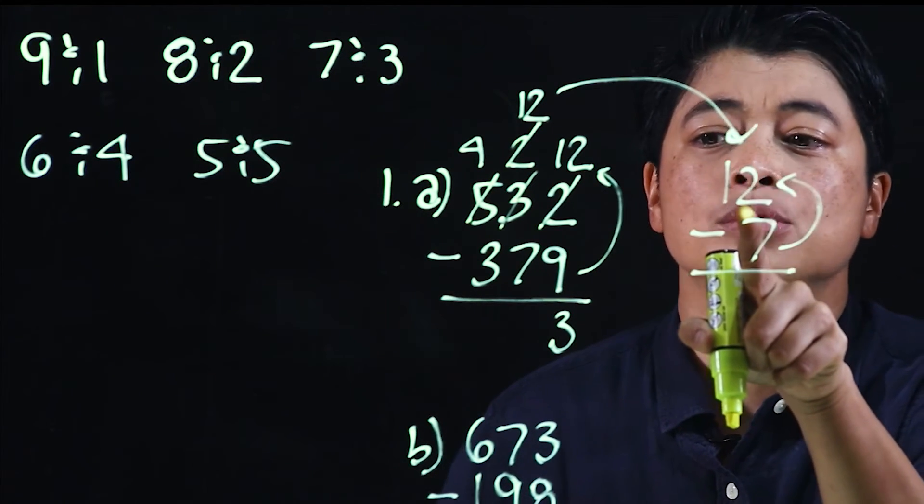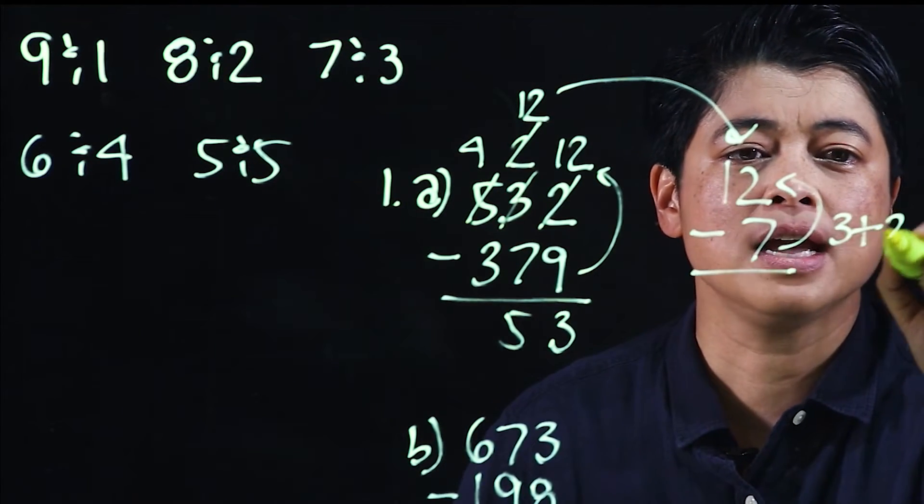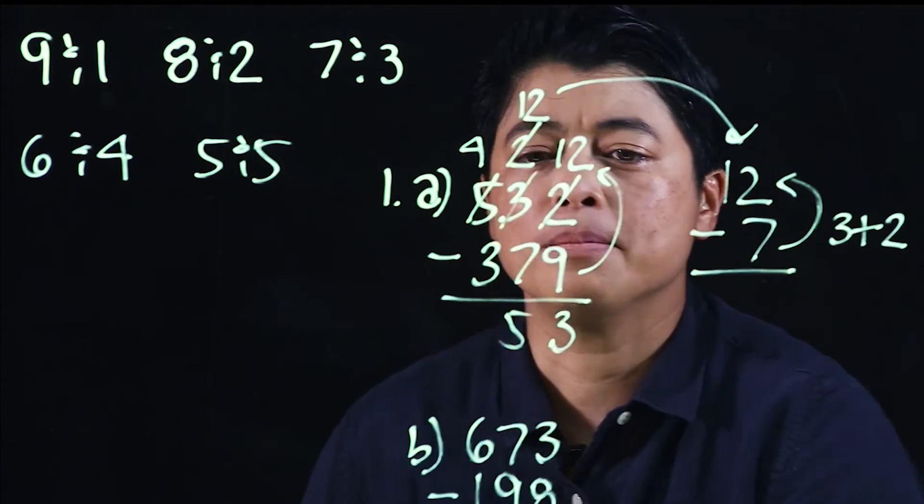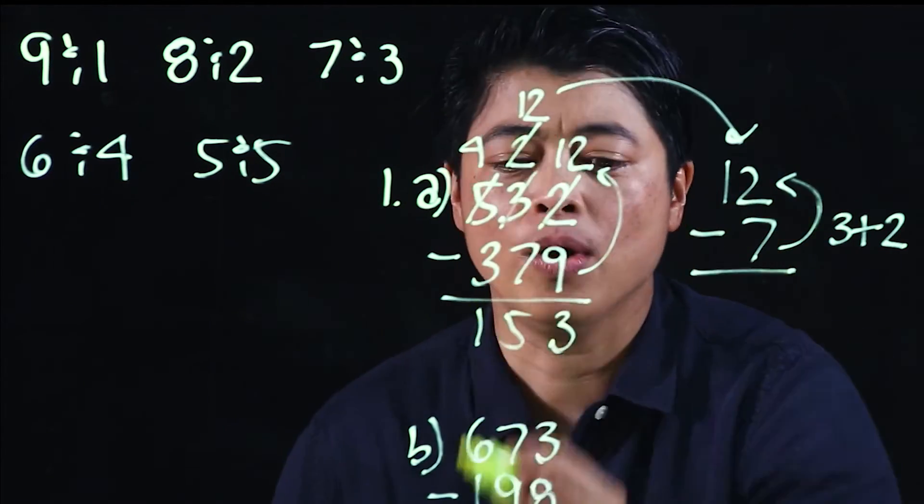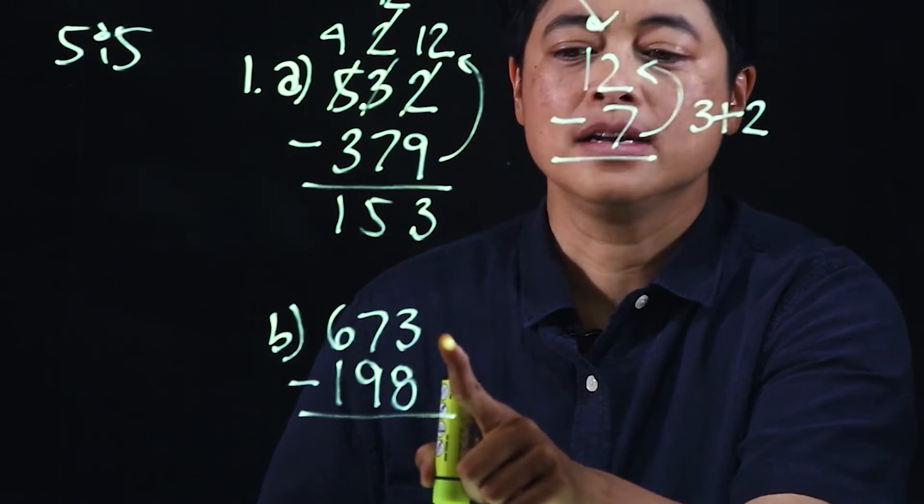We need three to get to ten and another two to get to twelve, which makes this five. If you want to, you can write three and two—that makes it five. And finally, four minus three is one.